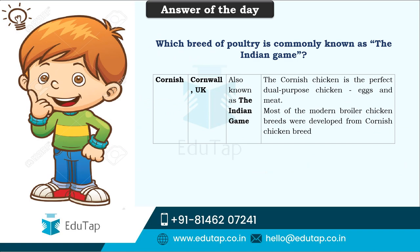Here comes the answer of the day. In the previous lecture, I asked which breed of poultry is commonly known as the Indian game. As hinted, this is not an Asiatic or Indian class bird — it is the Cornish breed, from Cornwall, UK. It is known as the Indian game because most modern broiler chicken breeds in India are developed from this Cornish breed. Though it is a dual-purpose chicken for both eggs and meat, it is generally reared for meat purposes only.